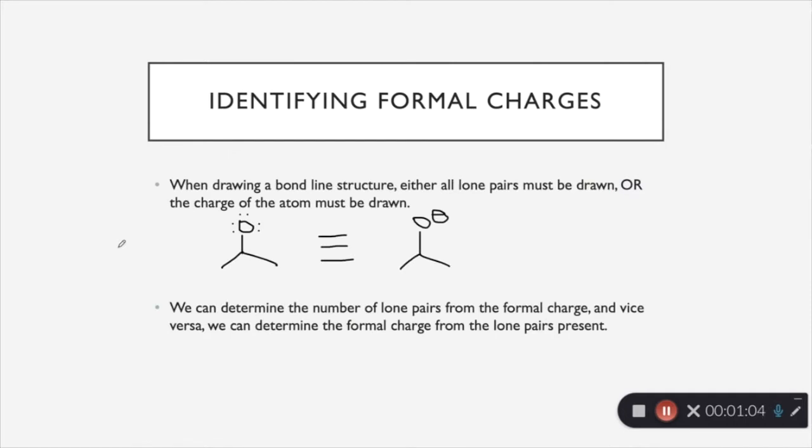So now we are going to learn how to identify formal charges. First off, if an atom has lone pairs and it is a neutral atom, it is not required to draw out the lone pairs. But if an atom has lone pairs and it has a formal charge, like in the case of this oxygen with this negative charge, you must either draw all of the lone pairs or you must draw in that charge on it. So these two mean the exact same thing and what we're going to learn next is how to take this given right here with just a charge and determine how many lone pairs are actually on it.